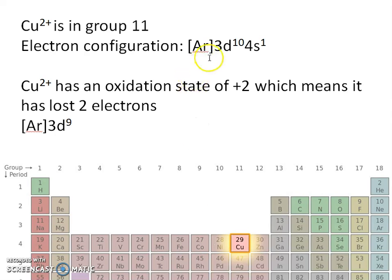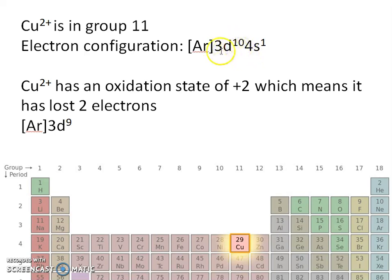Therefore the electron configuration of copper is argon, 3d¹⁰, 4s¹. This last electron fills up the d orbital, so the d orbital has ten electrons and is fully symmetric and completely full. This is a more stable configuration than placing the electron in the s orbital, so copper, like chromium, is an exception. In the case of Cu²⁺, it has an oxidation state of plus two, meaning it has lost two electrons — the 4s electron and one electron from the 3d orbital — giving a configuration of argon, 3d⁹.